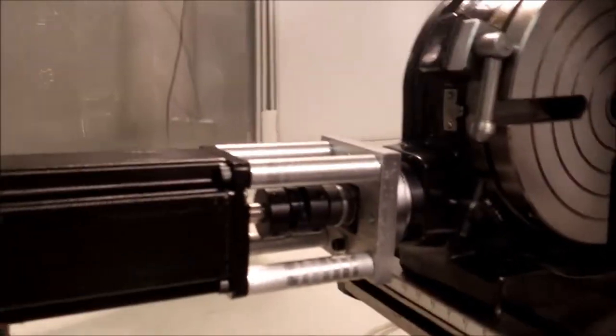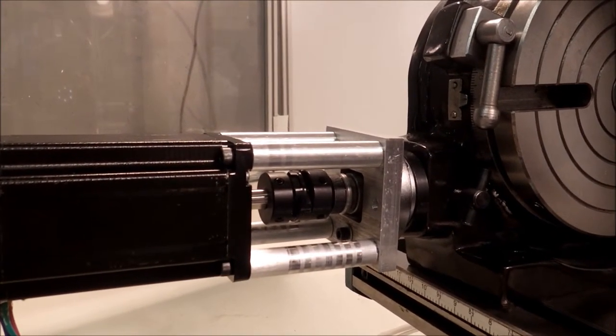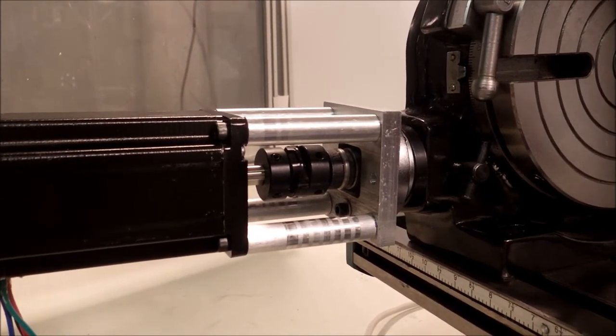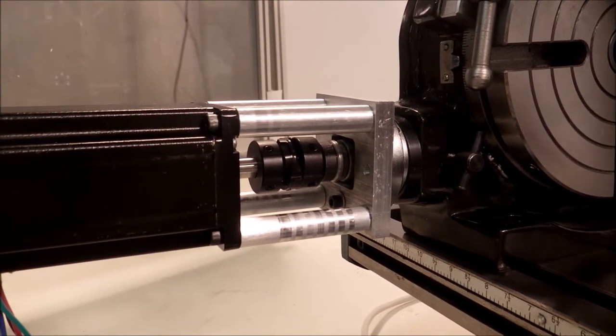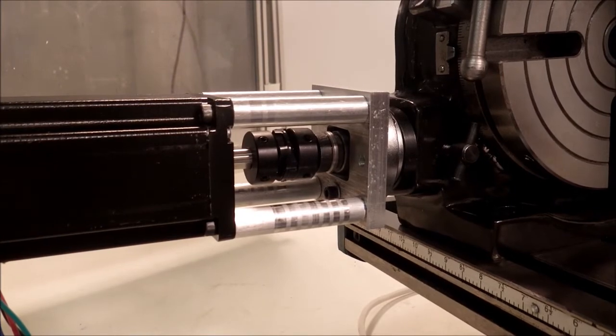As you can see, the motor mount is very much like the Haas Phase 1 conversion and that's what it's based on. The Y axis motor mount that was originally done for Phase 1 fit. I had to make new standoffs for it.